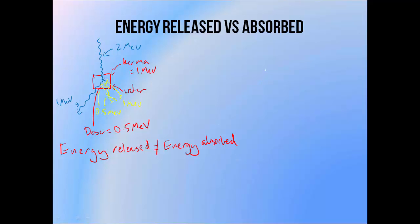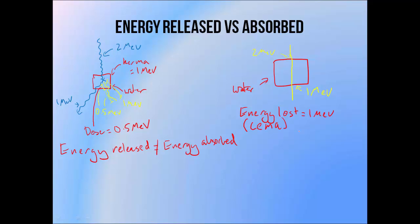Kerma is only applicable to secondary ionizing radiations like photons, but there's a similar quantity that applies to electrons. If an electron enters this mass of water with 2 MeV and leaves with 1 MeV, the energy lost inside this volume is 1 MeV, which we call the SEMA, or converted energy per unit mass. SEMA is for electrons what Kerma is for photons — the amount of energy lost or released in a mass of material, which doesn't necessarily equal the amount of energy deposited.